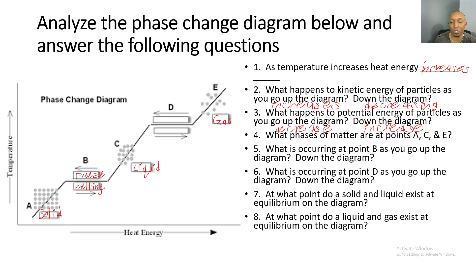Number six: what is occurring at point D as you go up the diagram? Going up, the liquid starts to boil — turning from a liquid into a gas, or another word for it: evaporate. And as we go down the phase change diagram at point D, the gas starts condensing into a liquid.